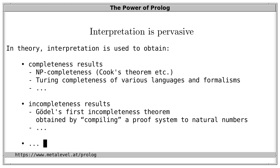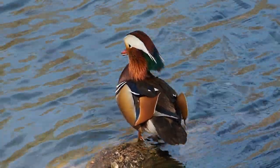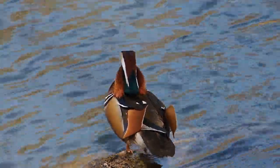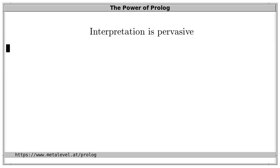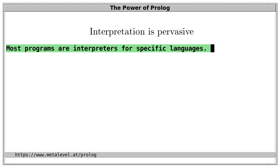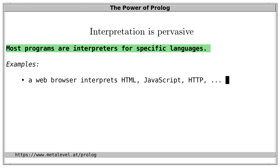Various incompleteness results are also closely related to interpretation. For instance, Gödel's first incompleteness theorem can be obtained by compiling a proof system to statements about natural numbers. Many undecidability results can likewise be obtained by showing that a formalism can interpret a Turing-complete formalism, making some of its properties undecidable. When interested in determining the power of a formalism, a good question is: what can we express and interpret with it? Can we interpret a finite automaton, a pushdown automaton, or a Turing machine? When given any formalism — a programming language, type system, template system — your first reaction should not be dismissal, but looking intently at what you can express with it.